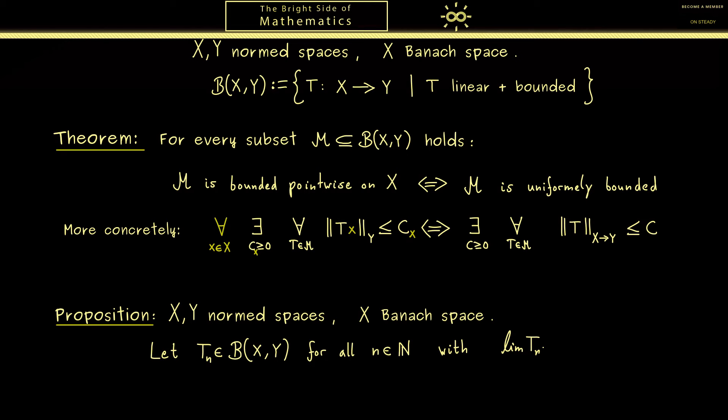The answer is we can define a limit operator which is again linear and bounded. This result is quite nice because we start with a continuous function, look at the pointwise limit and know that the limit function is again a continuous function. In general and you learned this in analysis this would be wrong but it is true when we have the linear operators defined on the Banach space.